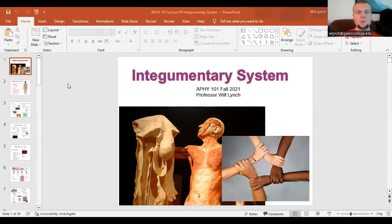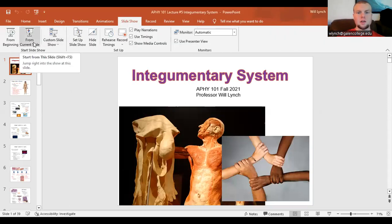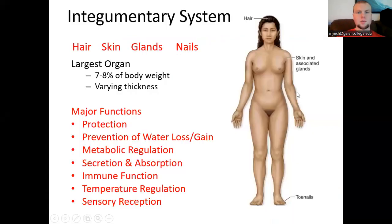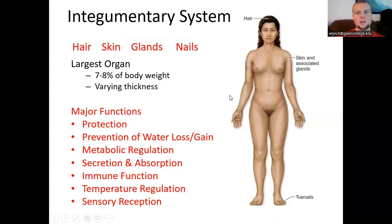Welcome to our lecture on the integumentary system of the human body, encompassing the hair, skin, glands, and nails. The integumentary system consists of these components, and the skin as a whole is the largest organ in the body.